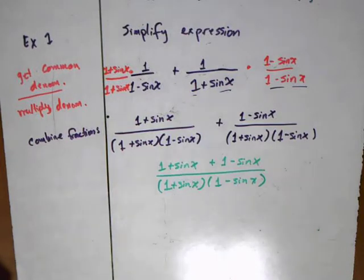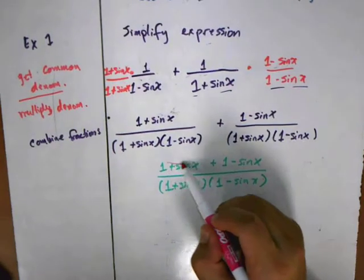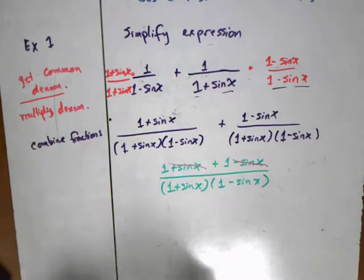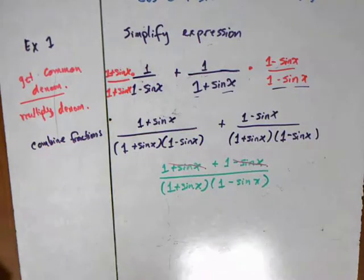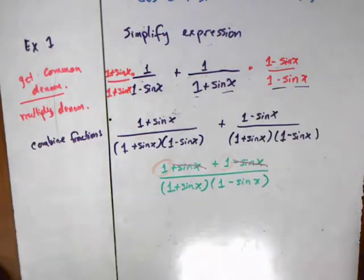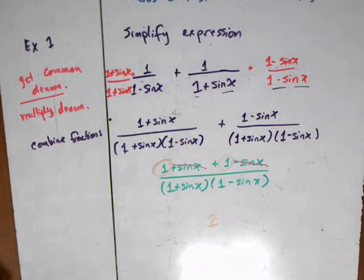Some things will cancel out conveniently for us. You can see here that you have a plus sine x and a minus sine x, so that will cancel. Also in the top, what remains is just you got a 1 and another 1, so that's just going to give you 2.